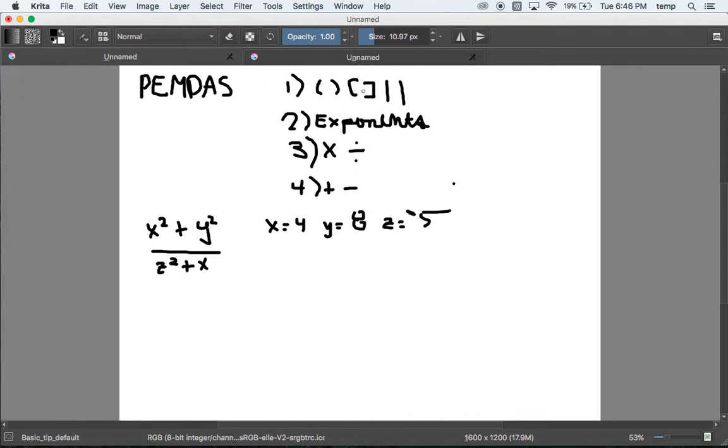Second rule, the second thing we check, the second order that we do things in is exponents. Third is multiply and divide, and our final step is addition and subtraction. So if we take a look, do we have any parentheses or grouping symbols? No, not really.